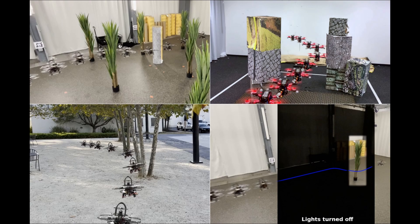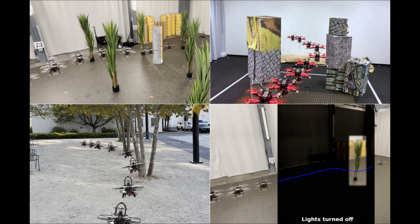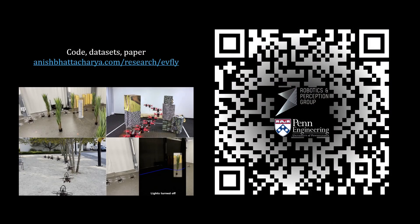We test our method on various scenes, indoor and outdoor, single and multi-obstacle, at speeds reaching 5 meters per second. We hope that this work can enable simulation pre-training for event-based vision-to-control robot policies. Check out our website with links to open-source code, datasets, and installation instructions.